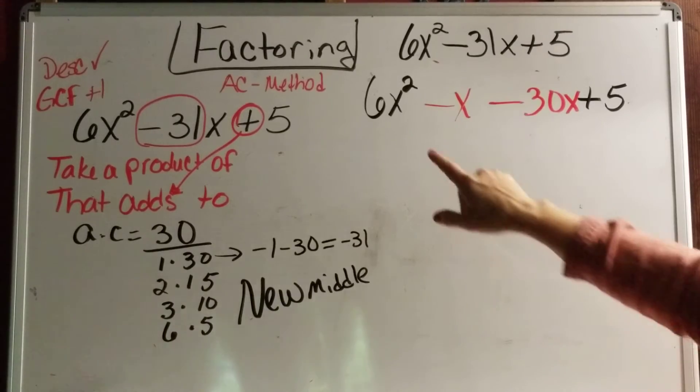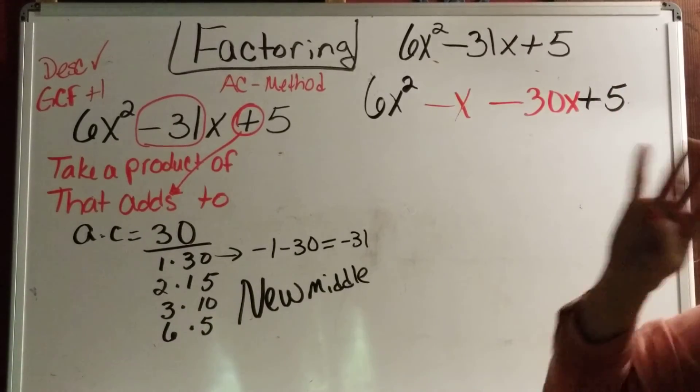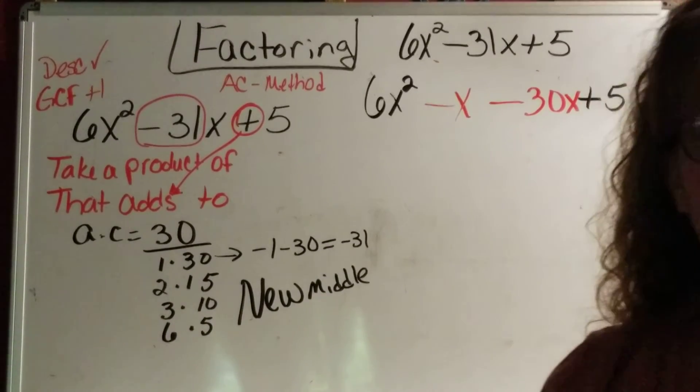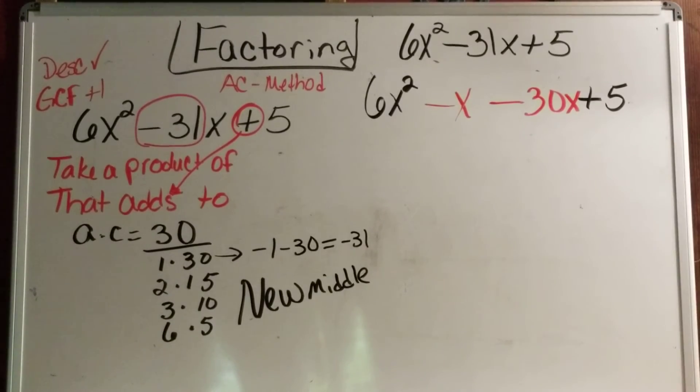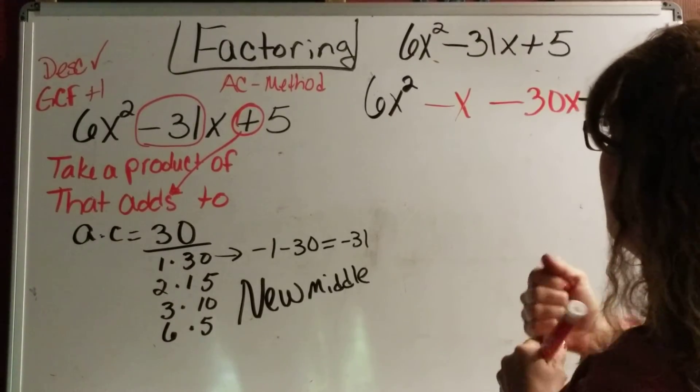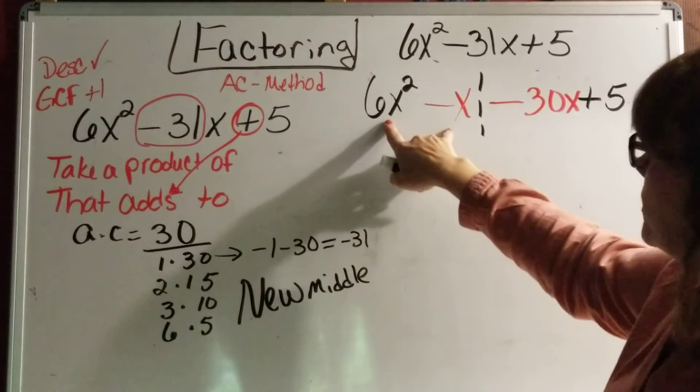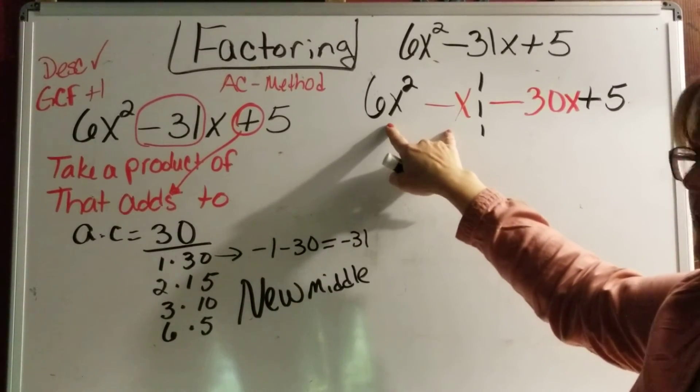What do we have here? We have 1, 2, 3, 4 terms. So now we're going to factor by grouping, by splitting this into half. And then let's look at these two. What is the GCF here?